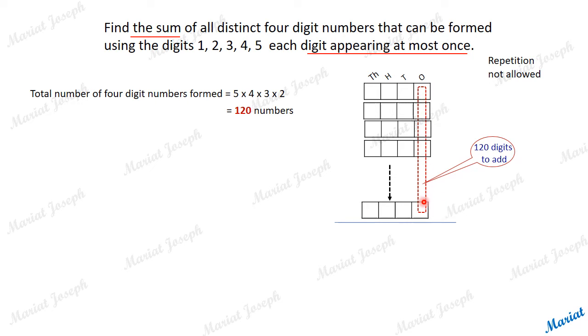If you add this unit digit, there will be 120 digits to be added. But all of these five digits are going to appear there 24 times each. As there are five digits and 120 total numbers, 120 divided by 5 means each digit will get an opportunity to come 24 times.